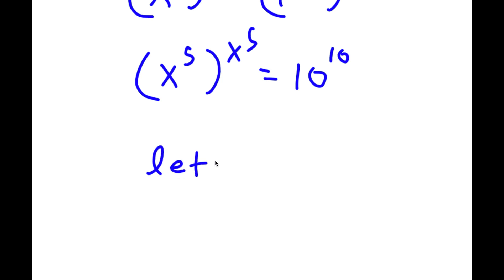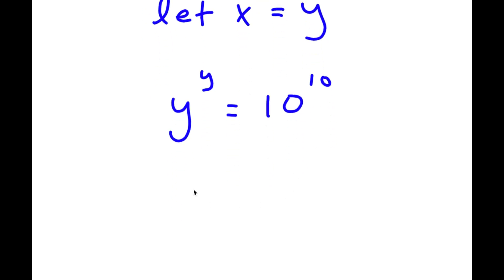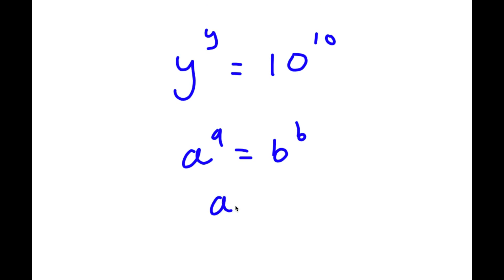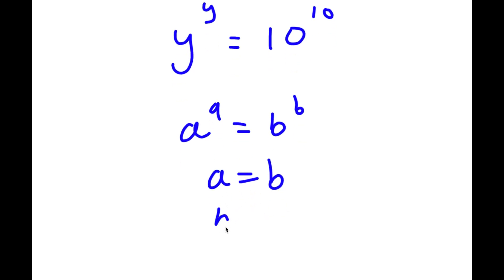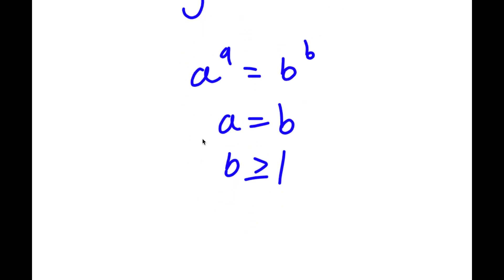Now, I'm going to let x to the power of 5 equal the variable y. So substituting, I get y to the power of y is equal to 10 to the power of 10. Now, if I have something in the form a to the power of a is equal to b to the power of b, this means that a is equal to b — but only if b is greater than or equal to 1. Since 10 is greater than or equal to 1, I can write y equals 10.